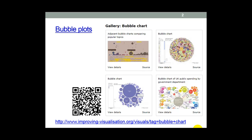Bubble plots are a type of scatter plot where data points are replaced by circles. The size of the circles or bubbles is a measure of the size of the variable. The Oxy improving visualization website is a good place to look for examples. You'll probably see there's a problem — people who use bubble charts, especially in the media, often tend to put far too much data into them.